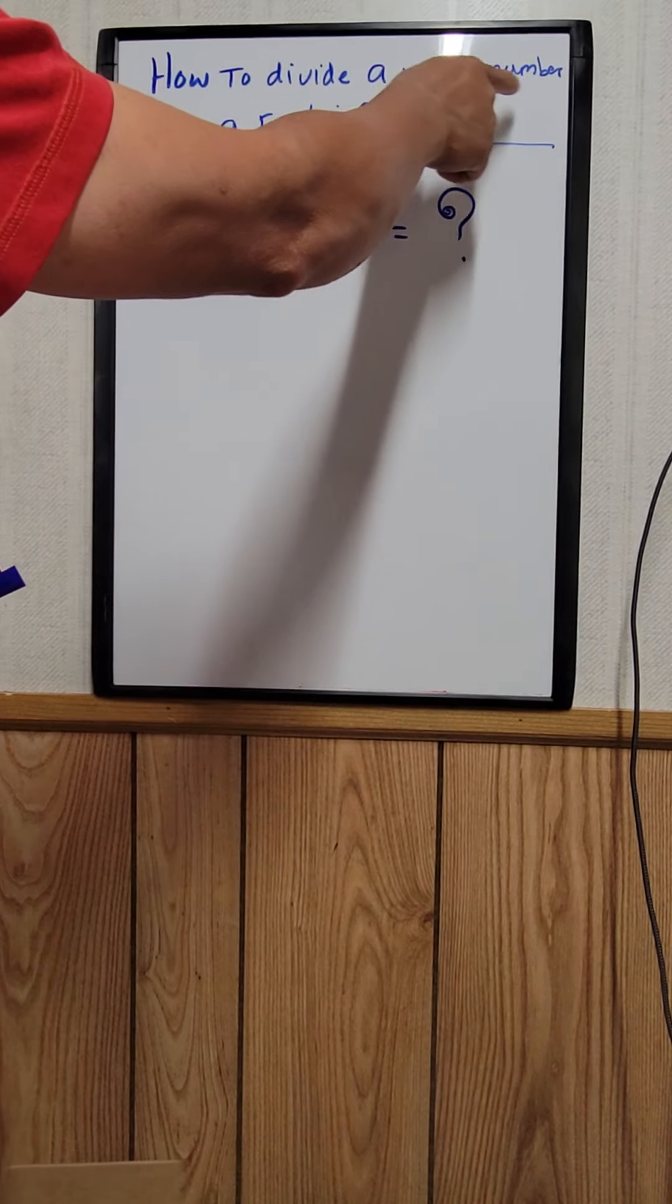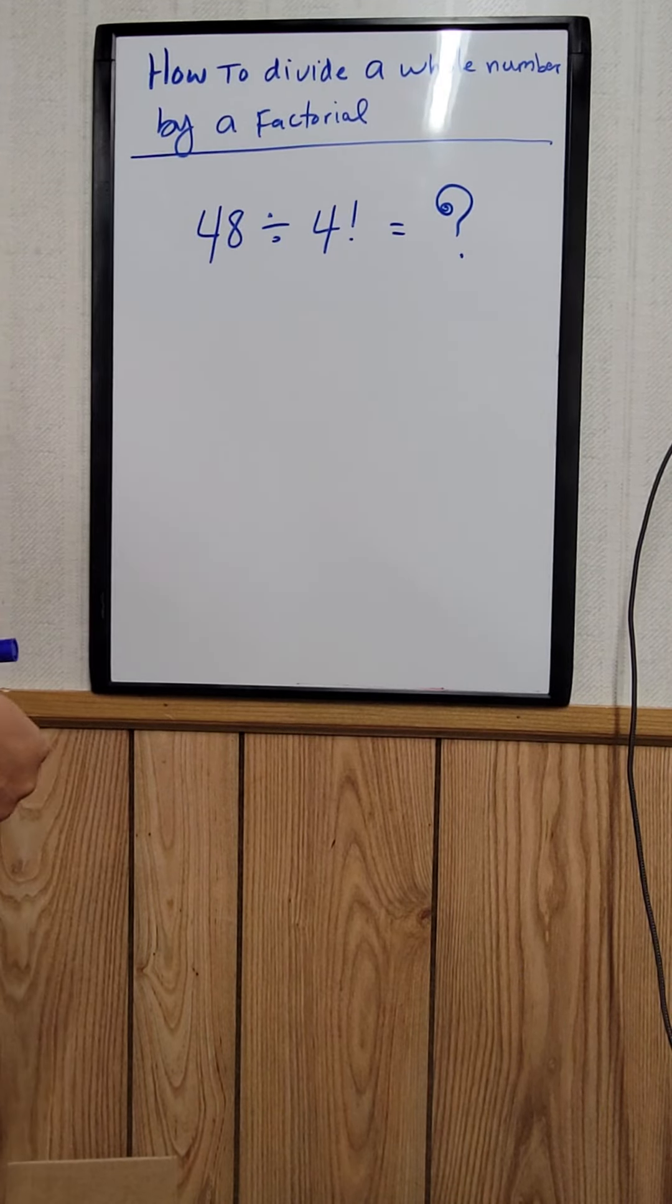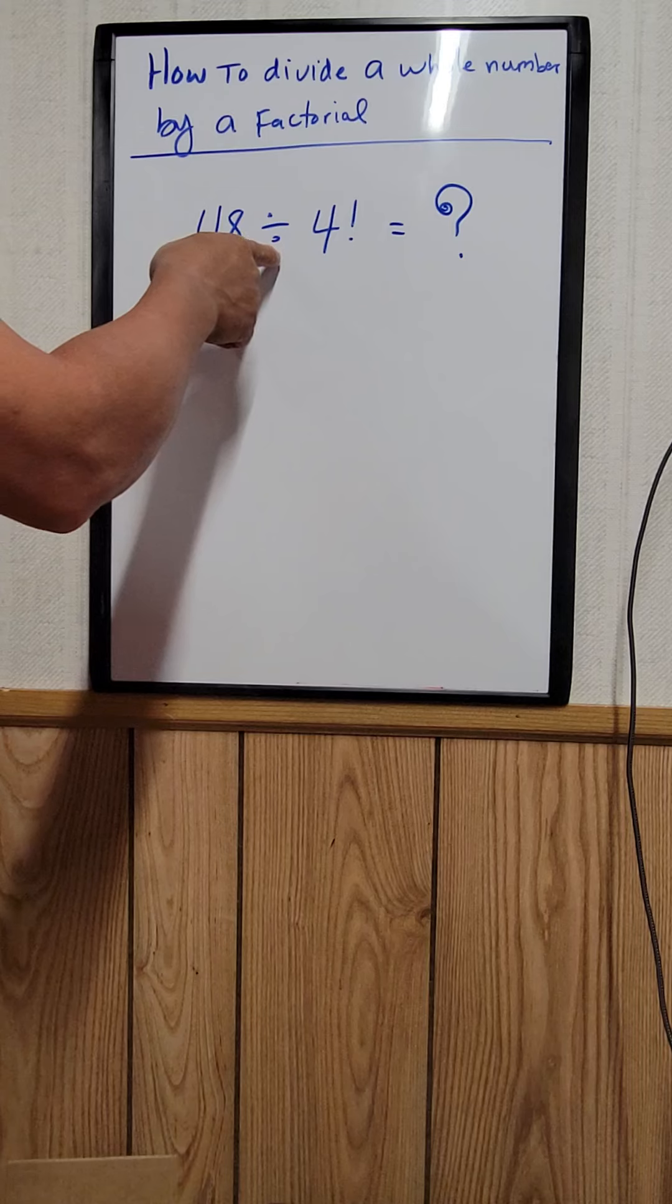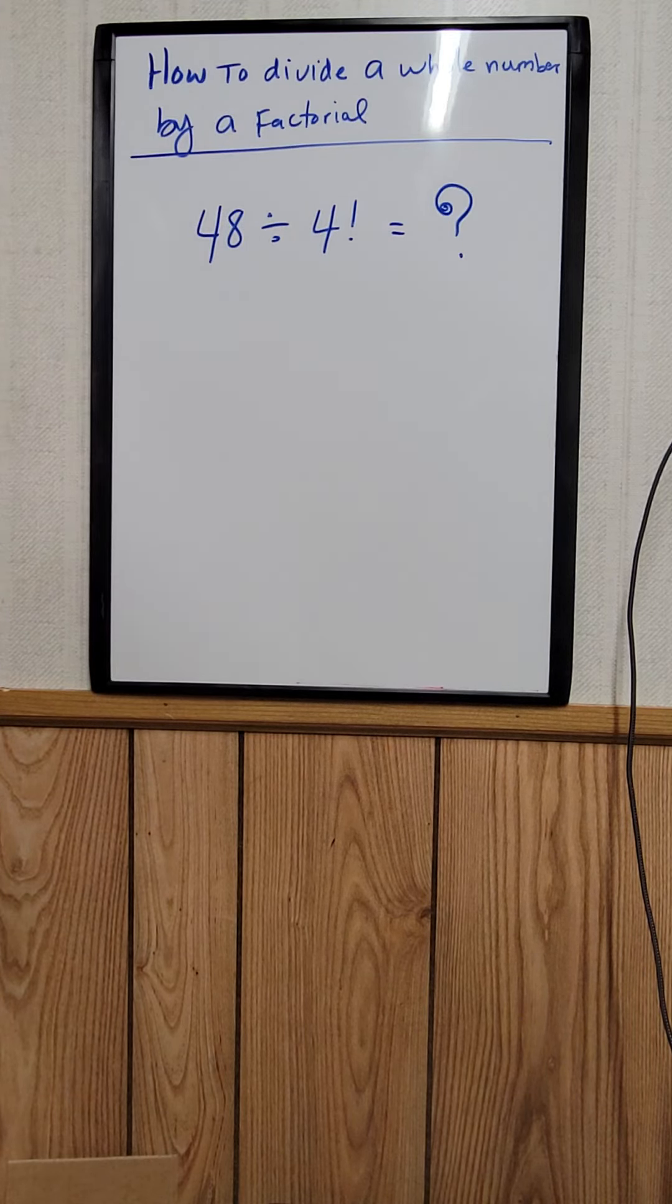How to divide a whole number by a factorial. For example, right here, 48 divided by 4 factorial is equal to what?